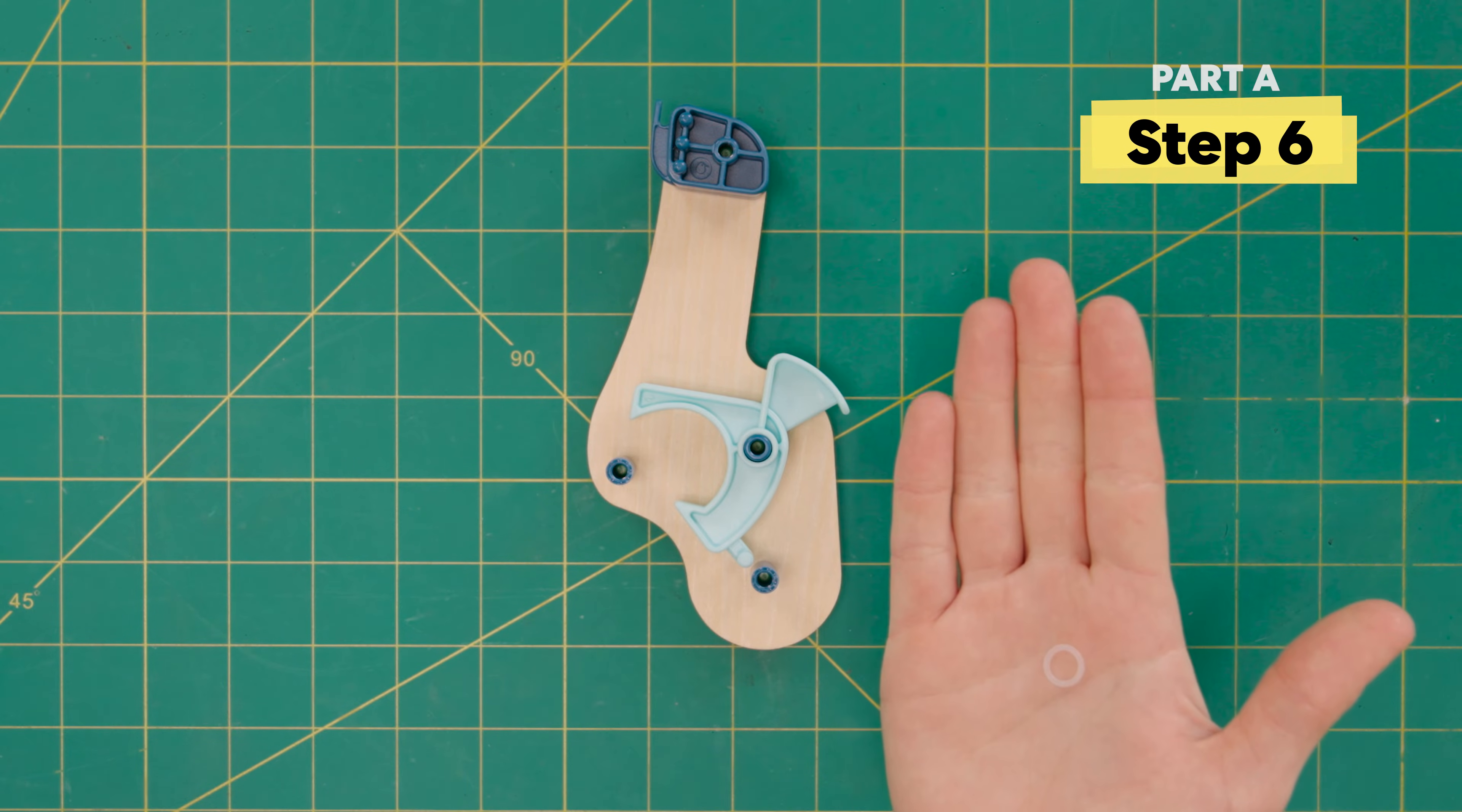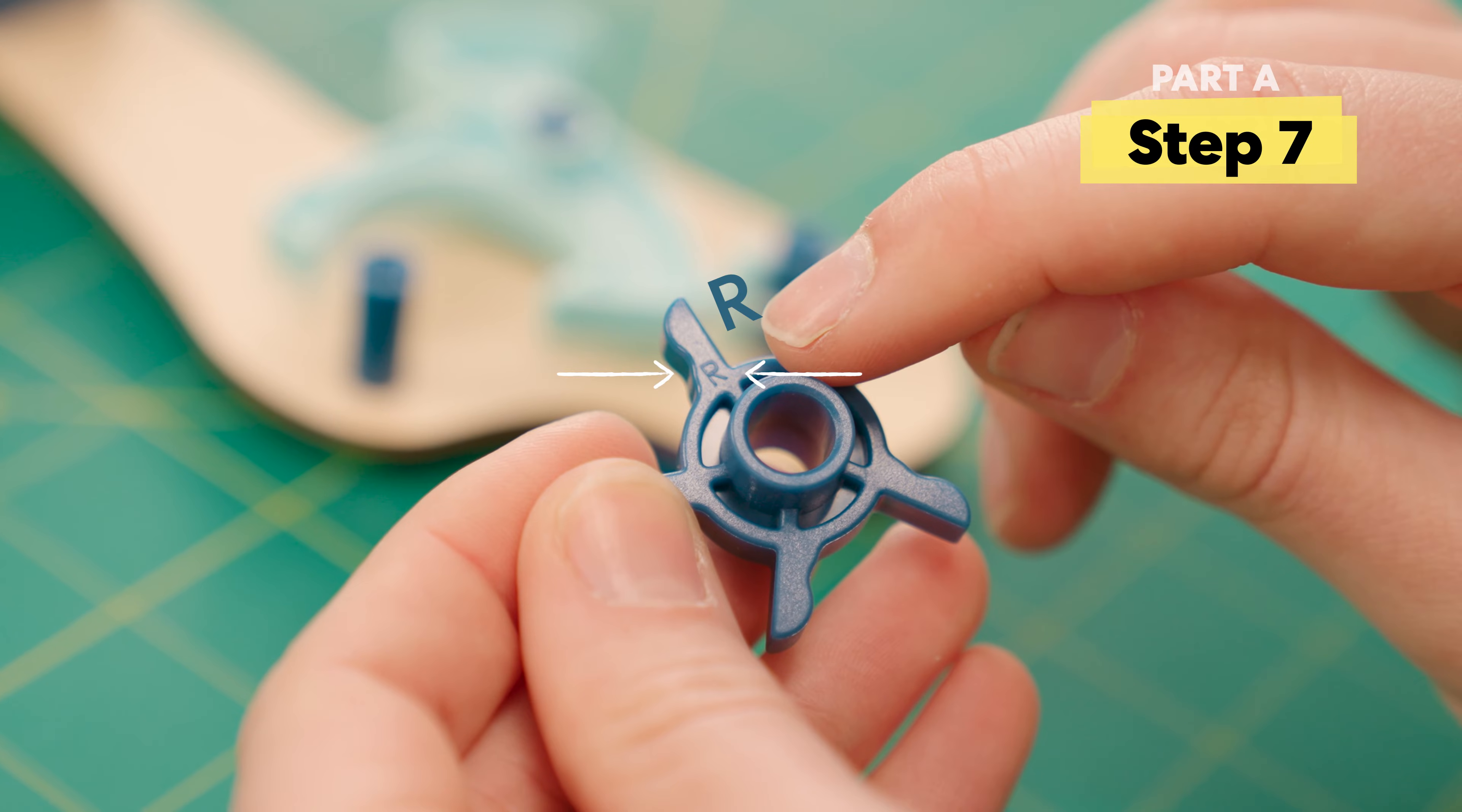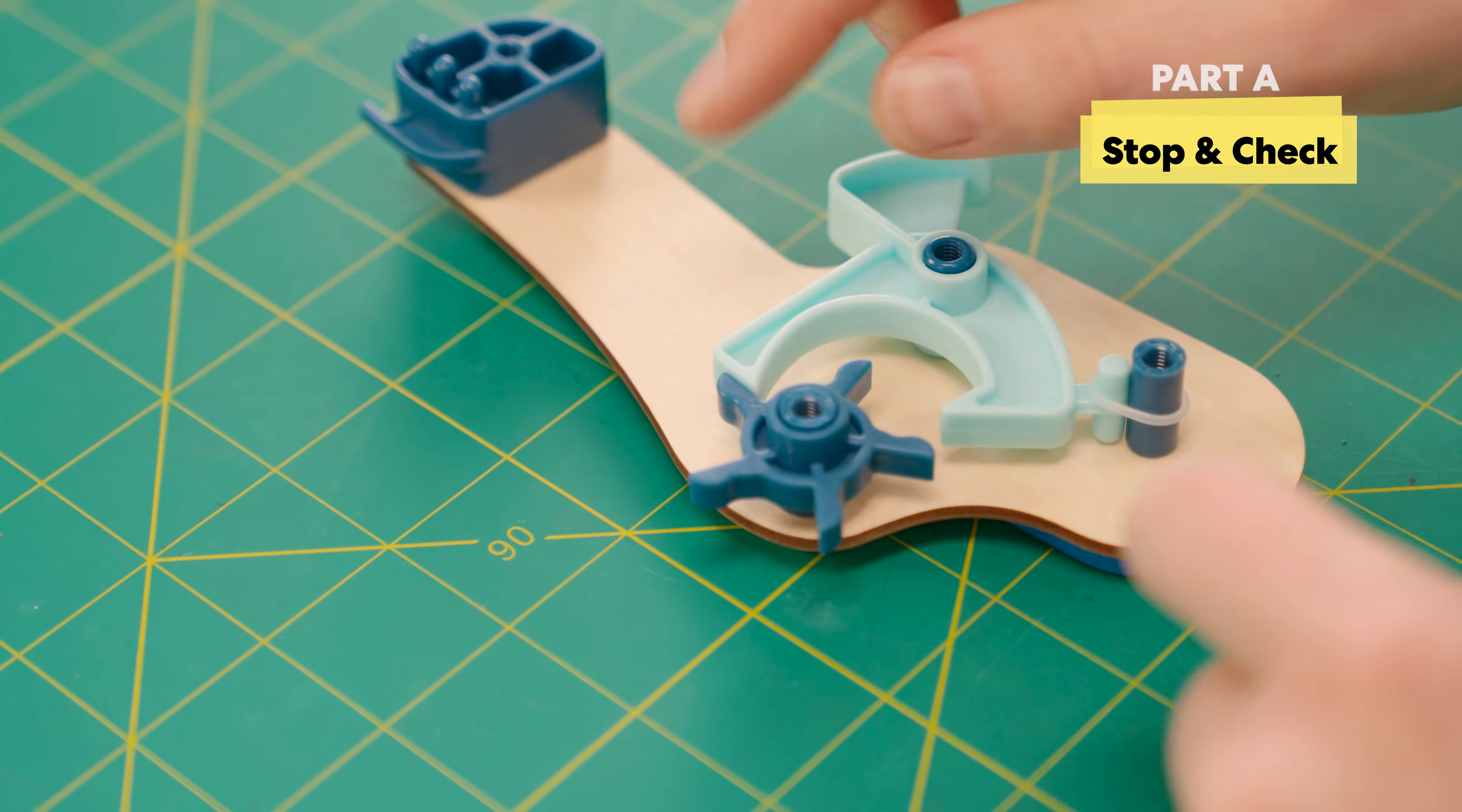Next, grab an o-ring and connect the spacer to this little dowel right here. Next, grab a peg wheel and put it on this spacer. Make sure that the flat side of the peg wheel is touching the flat side of this little ratchet.